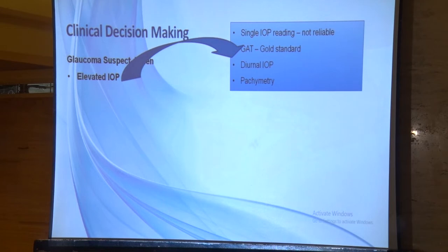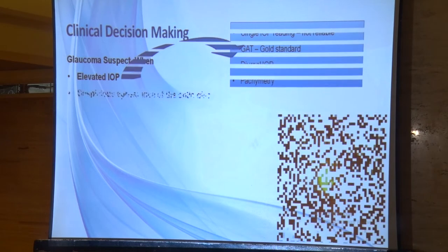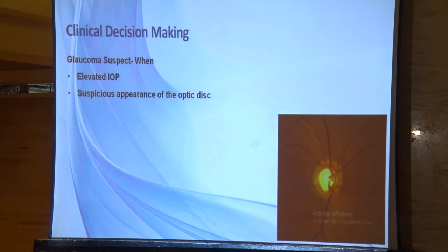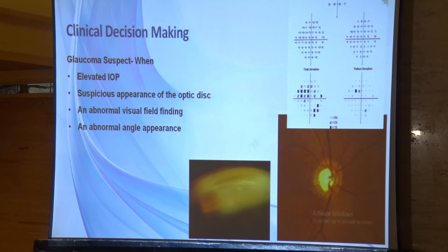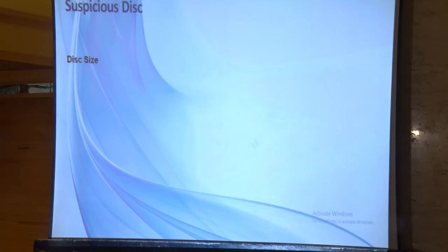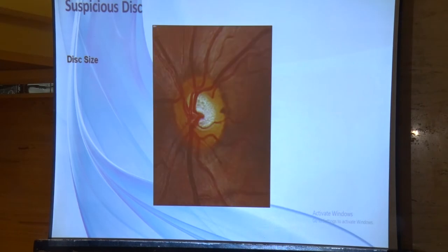Suspiciousness is definitely seen in glaucoma suspects, and sometimes there are abnormalities on visual field examination. Another important thing we often miss is gonioscopy, because about half of our glaucoma patients have narrow-angle glaucoma. Gonioscopy is a must for glaucoma diagnosis, or for any combination of these factors.